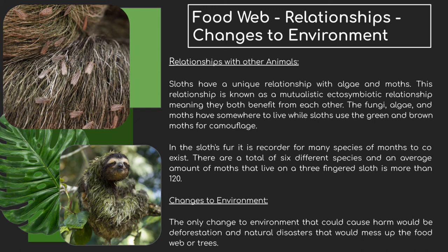In the sloth's fur, it is recorded for many species of moths to coexist — there are six different species that can live together on a sloth. When looking at a pale-throated sloth, there's an average of about 120 moths living on one sloth, so that's a lot of moths. Changes to the environment that could cause harm to these sloths include deforestation and natural disasters, which would mess up the food web. Additionally, when the sloth comes down to use the restroom, the moths on the sloth will eat what was digested and create their larvae on the waste. Once they go back, the cycle continues — the moth will grow and then move to a different sloth or the same sloth, and the cycle goes on and on.